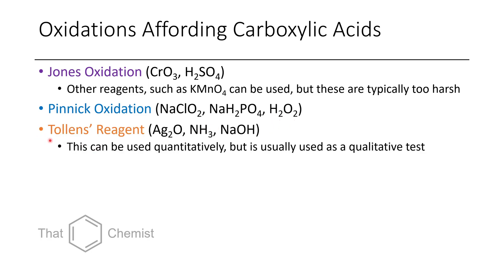The final method is using Tollens' reagent. This is mostly a qualitative test — if you want to check whether you have an aldehyde in solution, you can treat it with a mixture of silver oxide, ammonia, and sodium hydroxide. This will make a silver mirror on your reaction vessel. However, because it uses a stoichiometric amount of silver, it typically isn't used as a synthetic transformation, although there are some cases in the literature. You could find those using SciFinder or Reaxys.